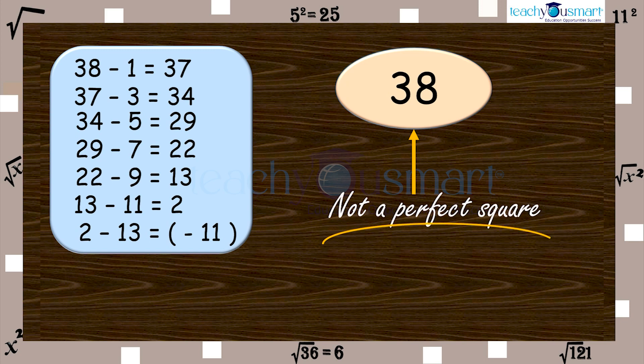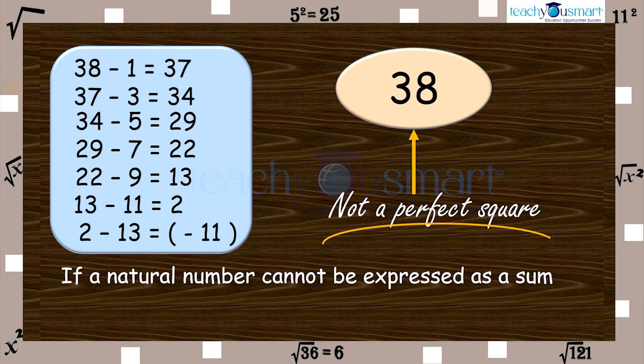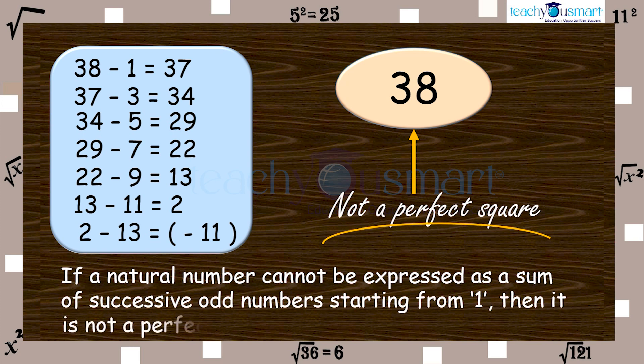So we can also say that if a natural number cannot be expressed as a sum of successive odd natural numbers starting from 1, it is not a perfect square. We can use this result to find whether a number is a perfect square or not.